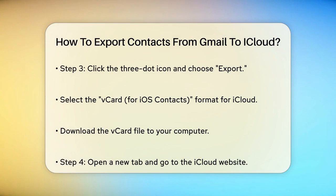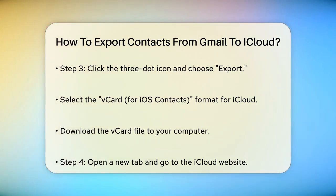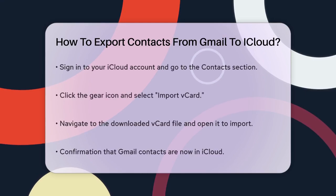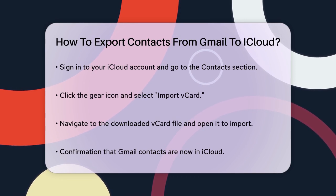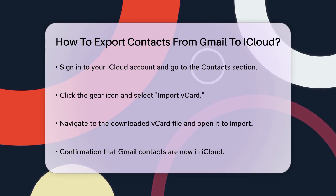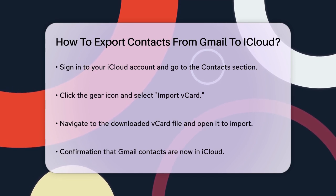Now let's move these contacts to iCloud. Open a new tab in your browser and go to the iCloud website. Sign in with your iCloud account and navigate to the contacts section. You'll see a gear icon in the bottom left corner — click on it and select Import vCard. A file explorer window will open, so navigate to the vCard file you just downloaded from Google Contacts and select it.